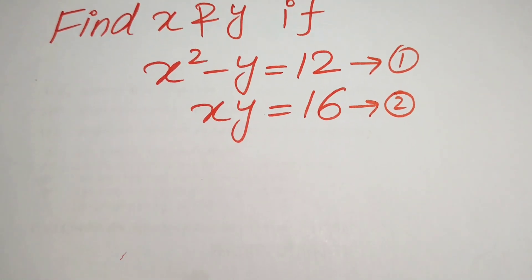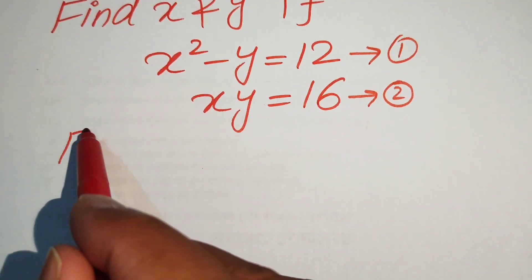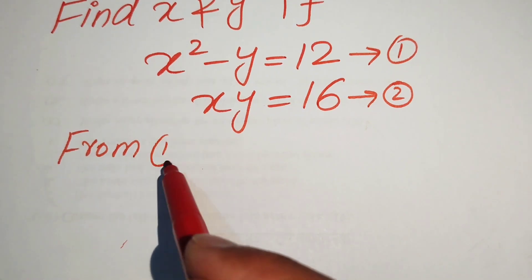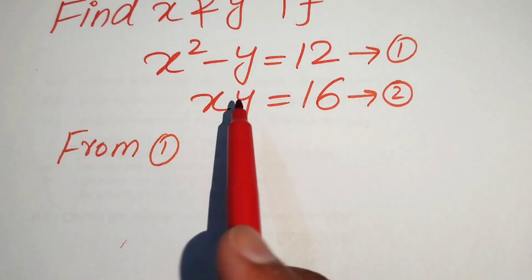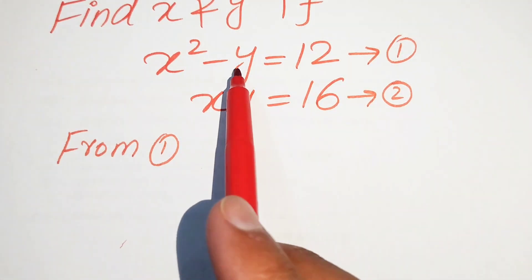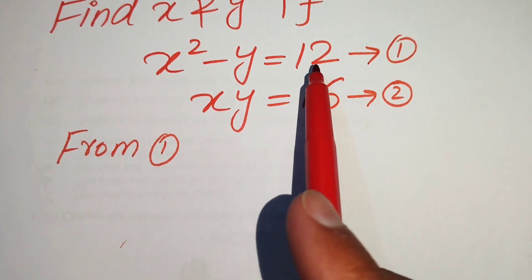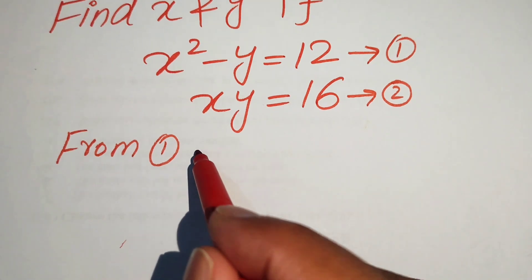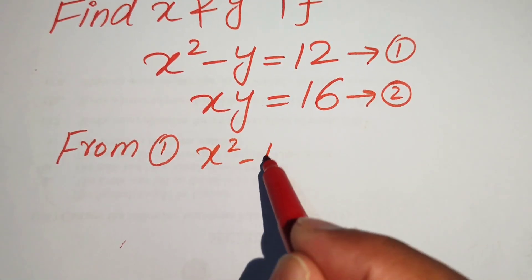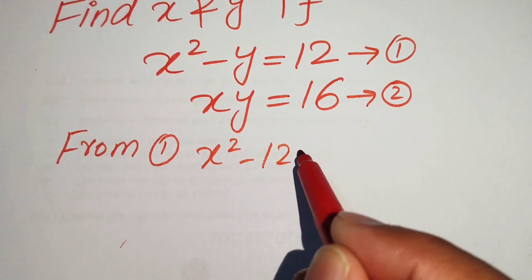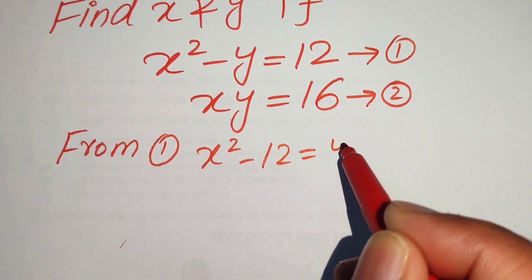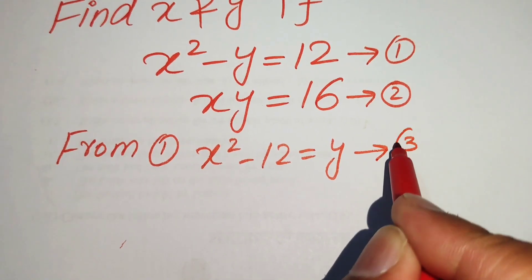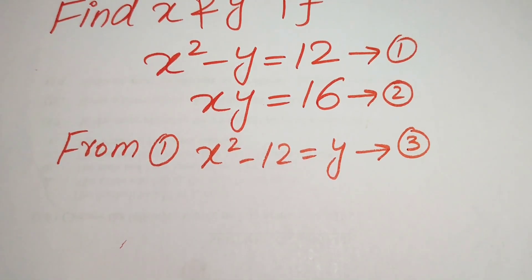First we focus on equation number one. We move minus y to the right-hand side and 12 to the left-hand side, giving us x squared minus 12 equals y. We call this equation number three.